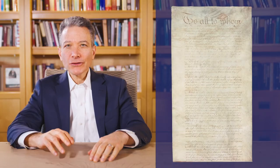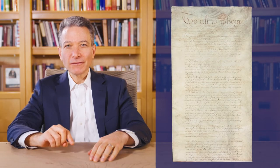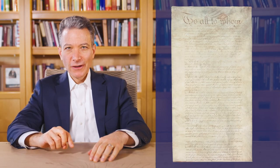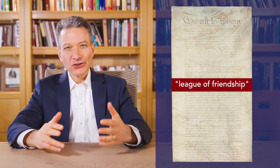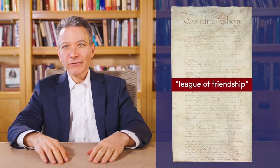Let's talk about the road to the Constitutional Convention. In 1777, a year after the Declaration of Independence, Congress created the Articles of Confederation. This was called a League of Friendship among the sovereign states. The states didn't want to give up their authority, and they wanted to create a weak national government.